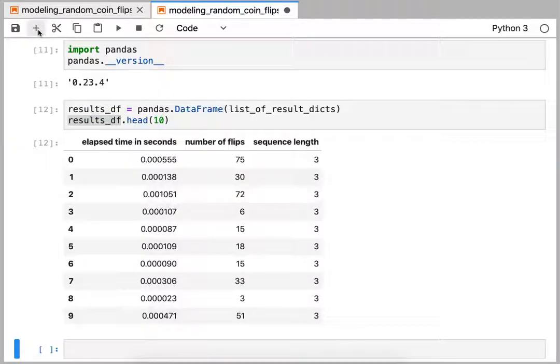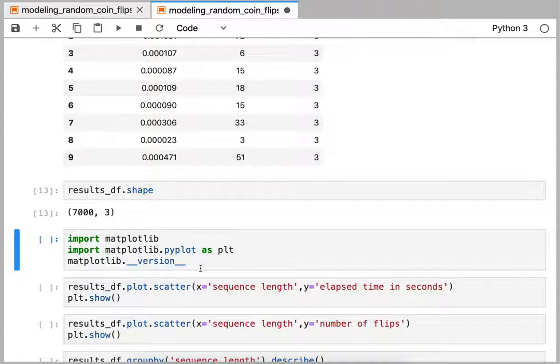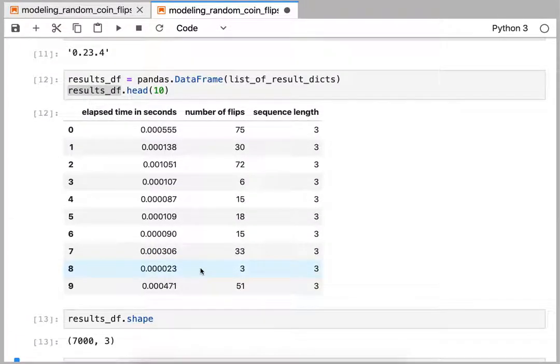Let's see how big that is. I'm going to measure the shape of that. So we did 7,000 different permutations of the sequence length from 3 to 10, and we did a thousand of each of those sequence lengths. So a thousand of three, a thousand of four, a thousand of five, and the total size, the number of rows in that is 7,000 in our data frame.